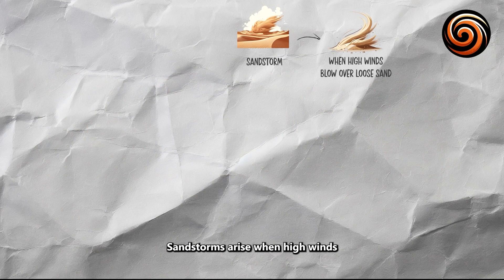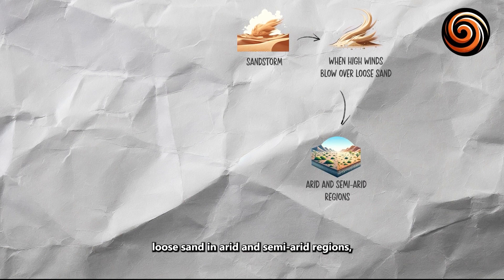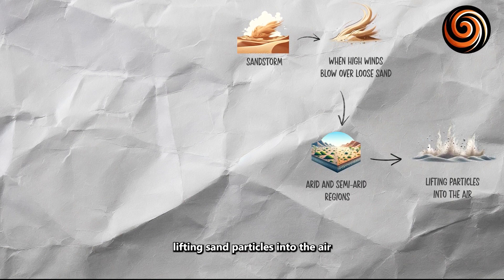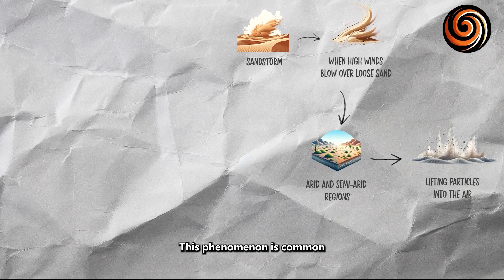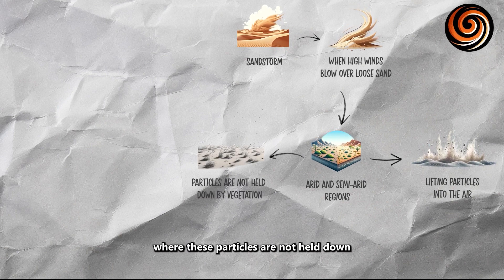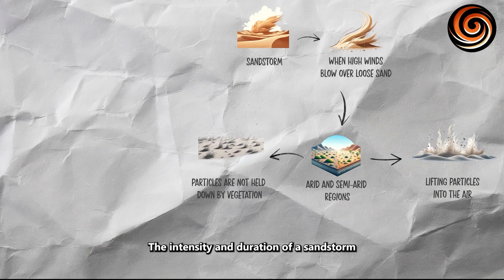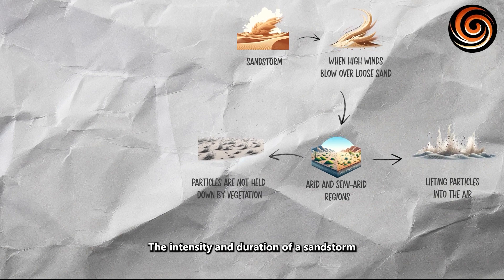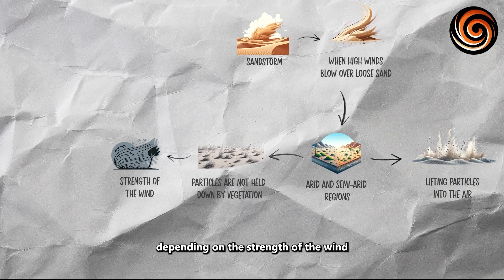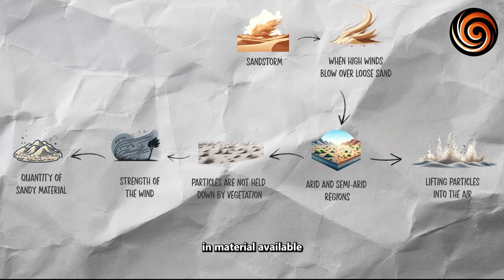Sandstorms arise when high winds blow over loose sand in arid and semi-arid regions, lifting sand particles into the air. This phenomenon is common in desert areas where these particles are not held down by vegetation or moisture. The intensity and duration of a sandstorm can vary depending on the strength of the wind and the quantity of sandy material available.